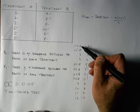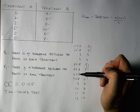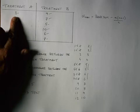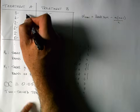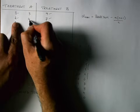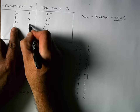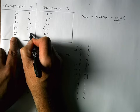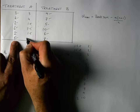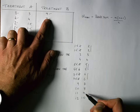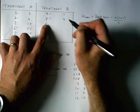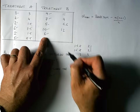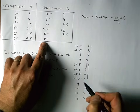Now we can see in our data that nothing ranks as number one or two, and so on. I'm going to take these rankings and place them beside each score. In treatment A: the value three is ranked 3, four is ranked 4, two is ranked 1.5, six is ranked 7.5, two is ranked 1.5 again, and five is ranked 5.5. In treatment B: nine is ranked 11, seven is ranked 9, five is ranked 5.5, ten is ranked 12, six is ranked 7.5, and eight is ranked 10.